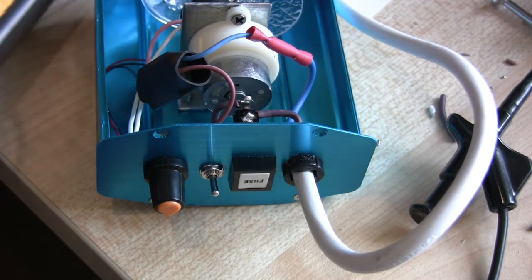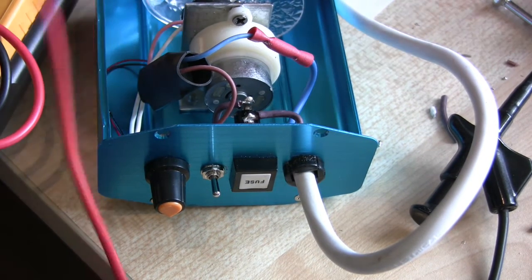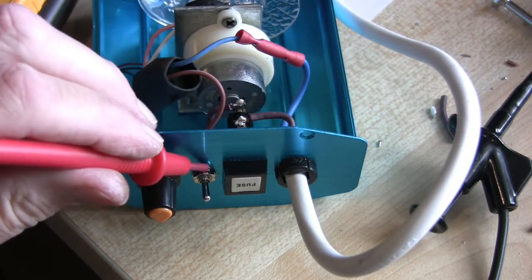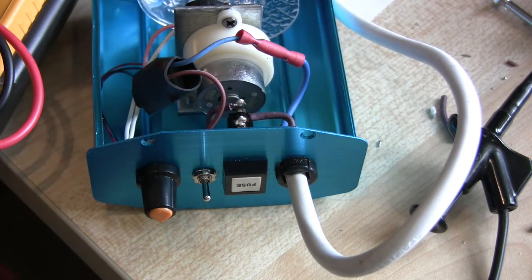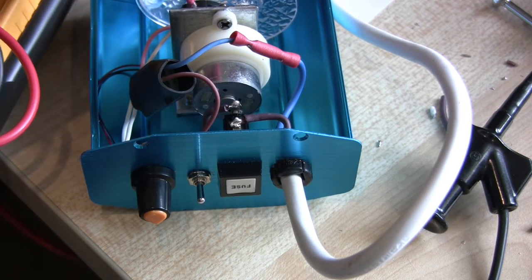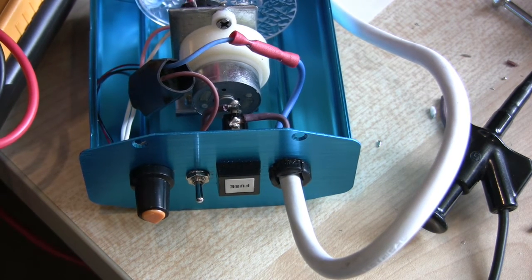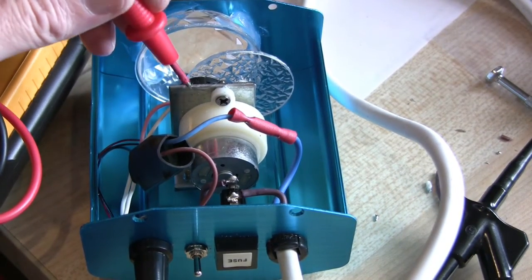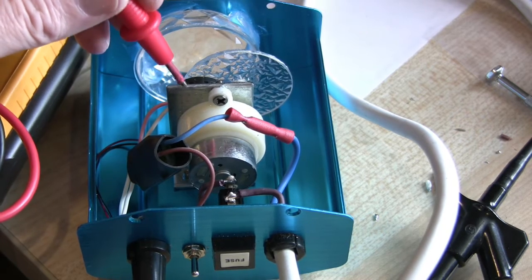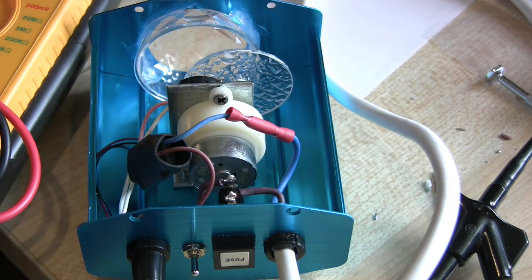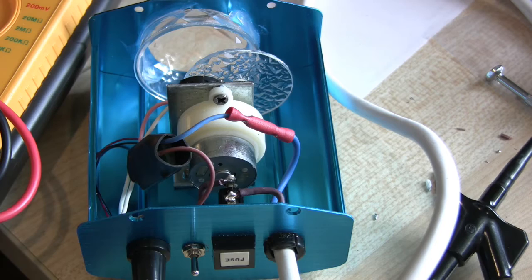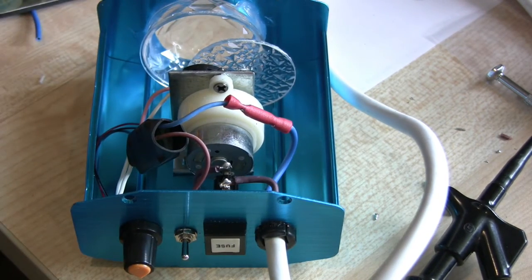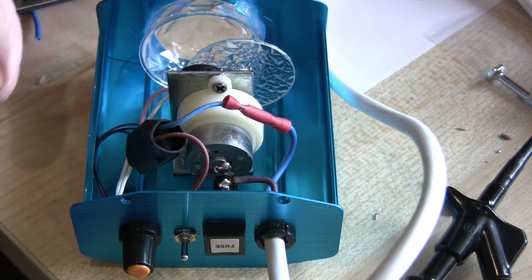The only thing I'm just about to check now is the earth connection. I've connected to the earth connection on the plug and here is earth. It makes good contact and here's metalwork, so all seems to be good. Anything that's metal is earthed, which is how it should be.